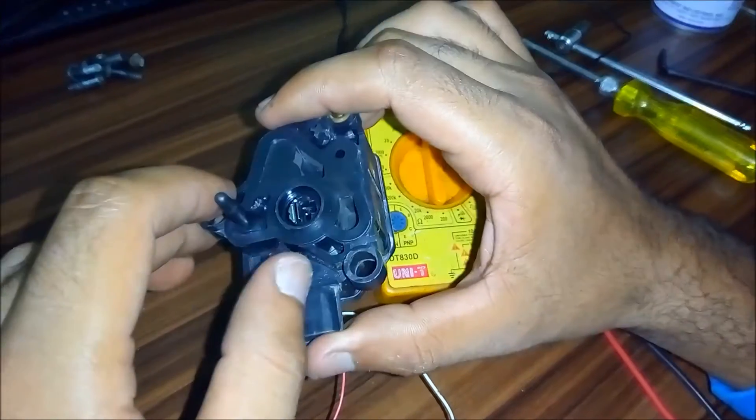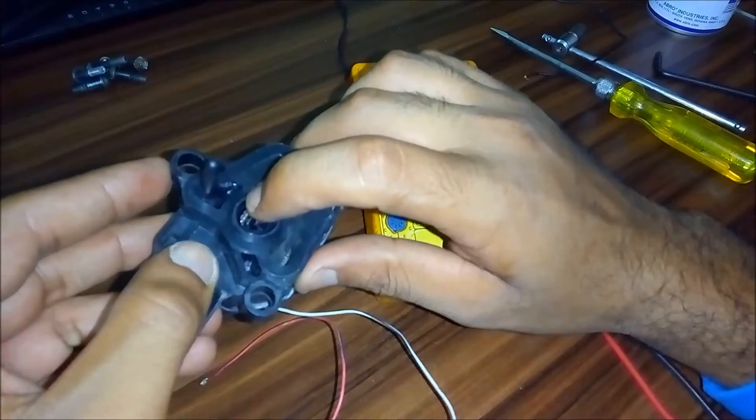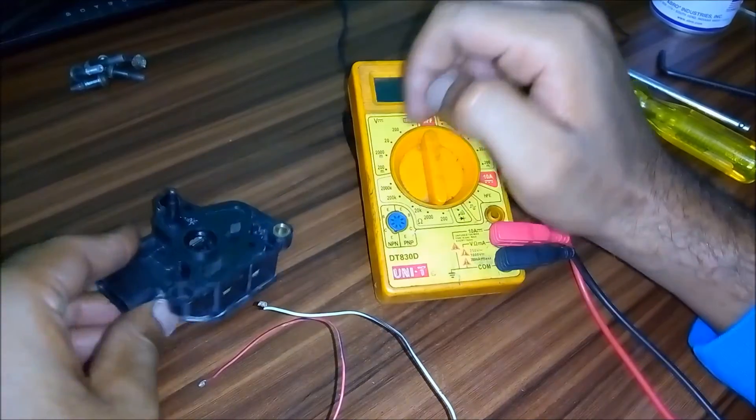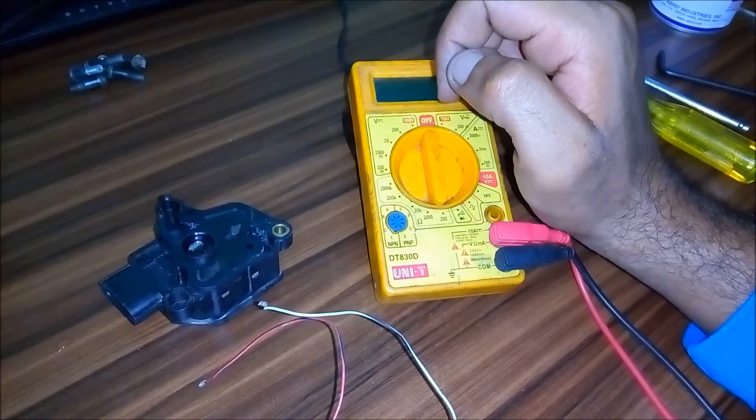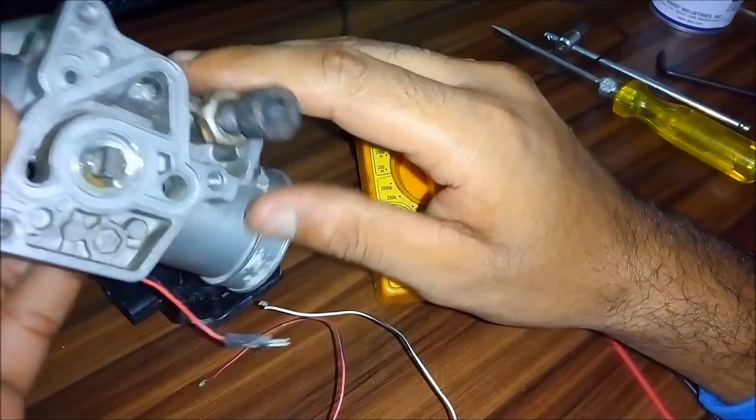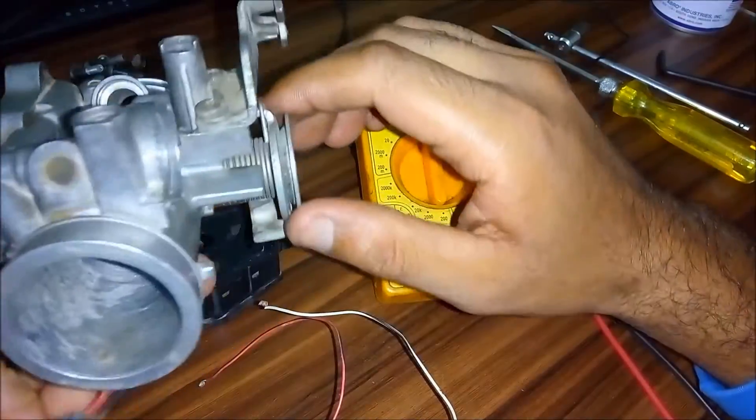Hey, what's up guys. Today I'm going to show you how to check your throttle plate angle sensor just by using a simple multimeter. We've got a throttle body of a 223cc motorcycle.